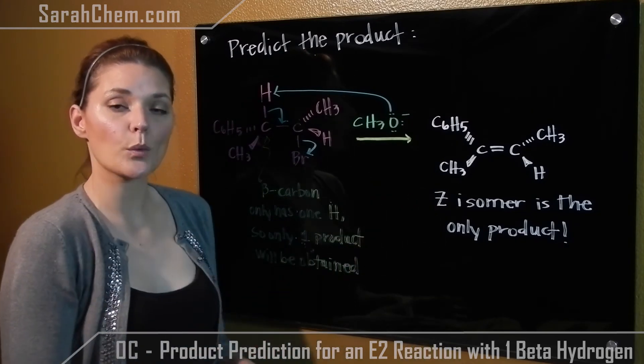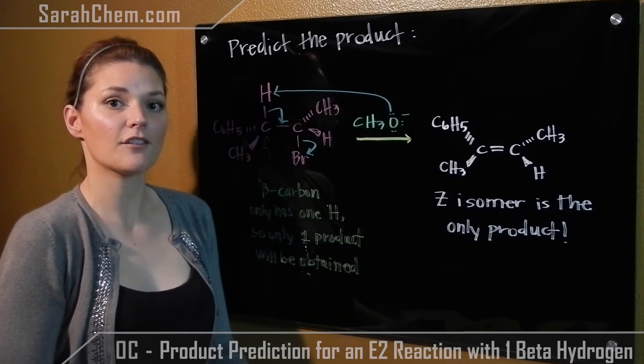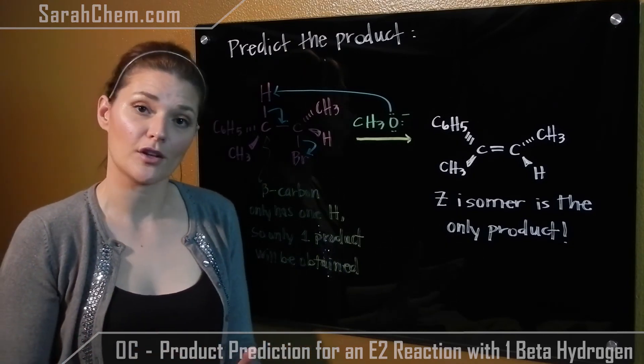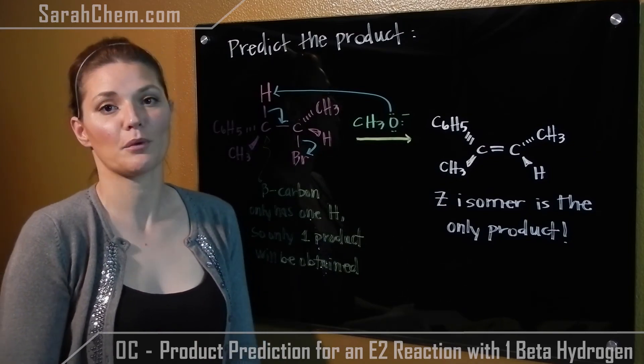So in a case where your beta carbon has only one hydrogen attached to it, you're going to have a fixed configuration that comes out. Make sure you're very aware of what the starting configuration is because that will affect what the product configuration is that you will predict.